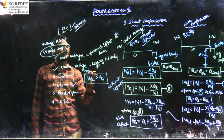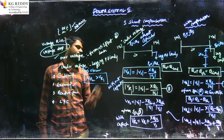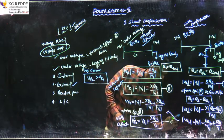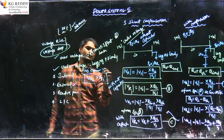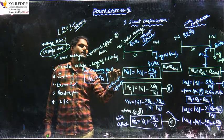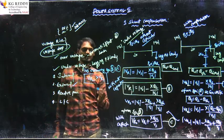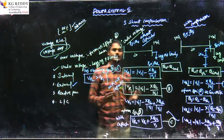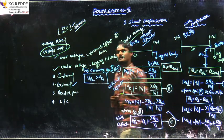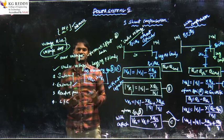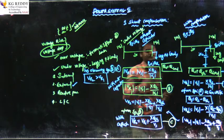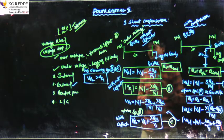By observing equations B and C, we can conclude that the receiving end voltage with compensation is more than the receiving end voltage without compensation. The voltage profile has been increased.